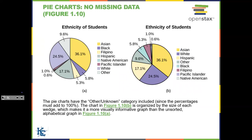Both pie charts A and B have all the data, but they look very different. Pie chart A is hard to read because the pieces are scattered. Pie chart B is much easier to compare because the pieces are arranged consecutively by size — largest to smallest around the chart. Pie chart B is the better way to sort and display the data so it's easier to read and understand.